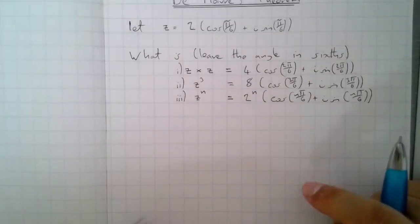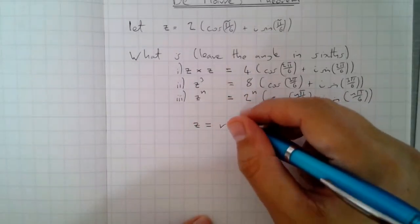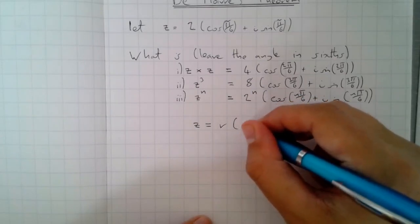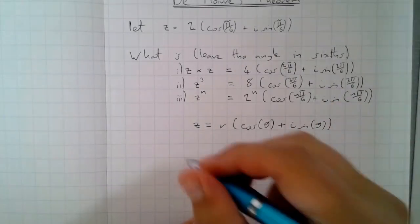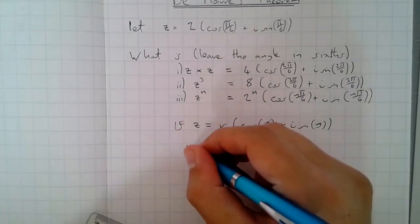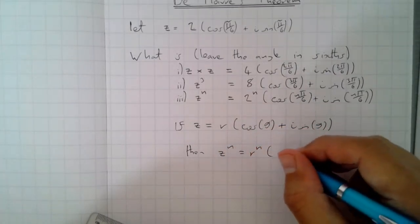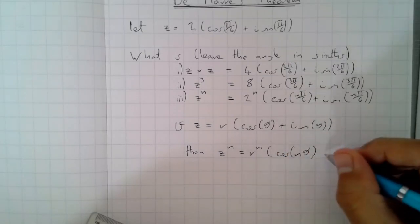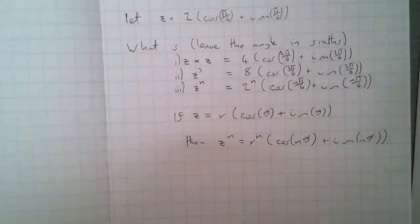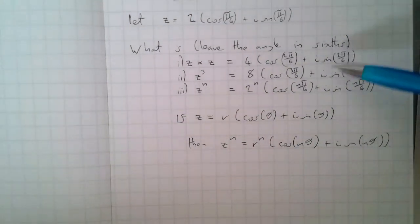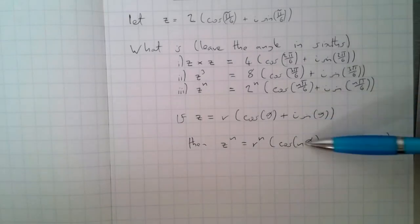And this bottom line here leads us on to what De Moivre's theorem is. De Moivre's theorem says for some complex number in modulus argument form with the modulus of r and the argument of θ, z equals that, and then z to the n is equal to r to the n cos nθ plus i sine nθ. Just to be clear, this is definitely not a proof. This obviously is true, and we've inferred from that, we've hypothesized that this is probably true.